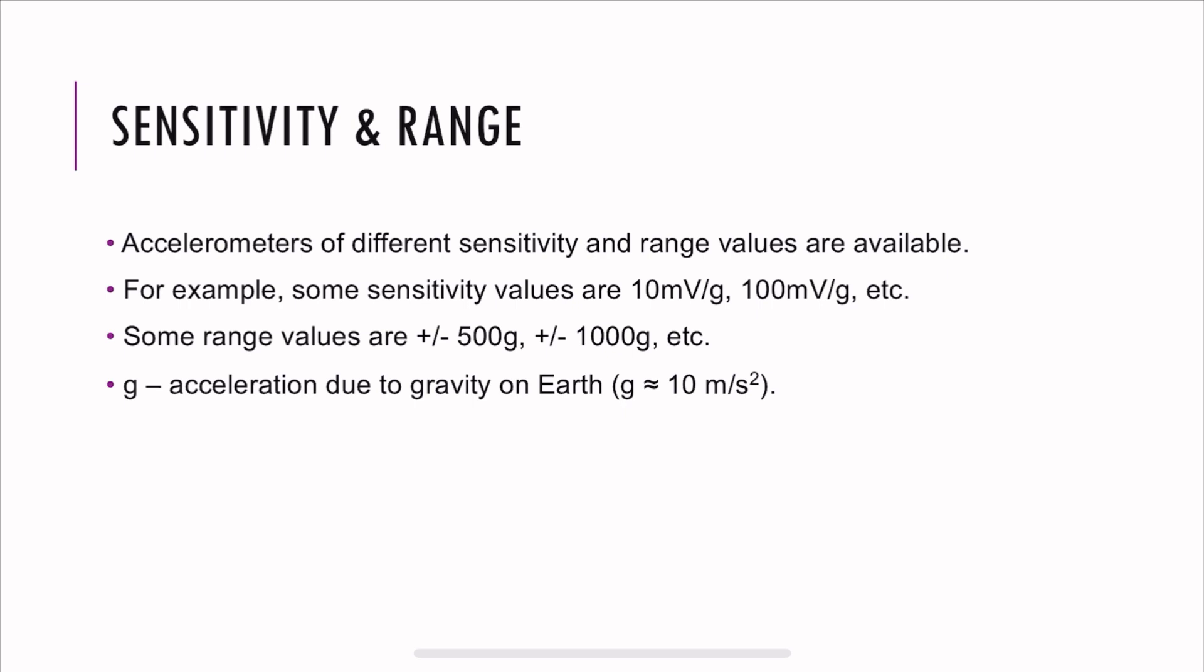You can also have the sensitivity values, for example, 10 millivolts per G, but then 1 G is almost 10. So if you plug in, the same value in a different unit would be like 1 millivolt per meter per second squared. So you need to be careful with the units.